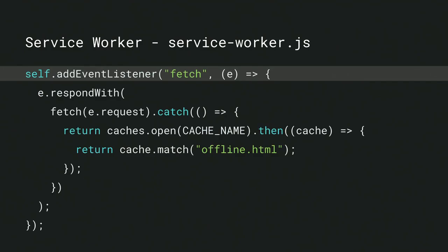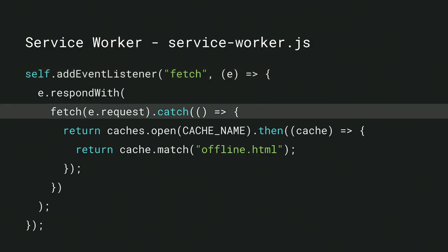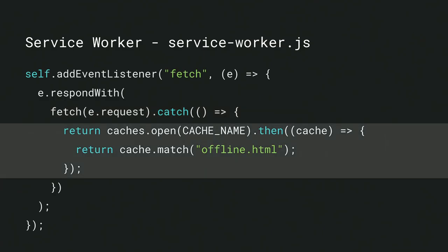Now we've got that page cached, we need to ensure that we retrieve and serve that page when the network is down. We do that with a fetch event listener, which will be fired for every network request made by your site. This allows the Service Worker to intercept all those network requests and substitute them if necessary. When that fetch event fires, we're going to use a network-first strategy in this example. We're going to respond to the fetch event by calling the fetch method, and that sends the request to the network. Should that network request fail, we'll catch the error, open up our cache, and serve the offline page that we stashed earlier, ensuring that the user is presented with app-themed UI at all times.